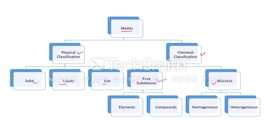Pure substances are further classified as elements and compounds. And mixtures are further classified as homogeneous and heterogeneous. In this chapter we will discuss in detail about elements, compounds, and mixtures.